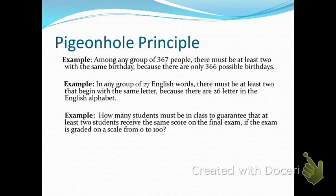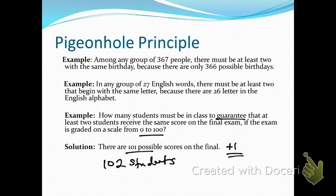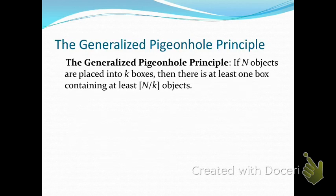How many students must be in a class to guarantee that at least two receive the same score on the final exam, if it is graded on a scale from 0 to 100? Including zero, there are 101 possible scores. To guarantee at least two students share the same score, we always add one — so we need 102 students. Keep in mind this is a guarantee; it might be that everybody scores 100, but to guarantee it in all cases, you always add that plus one. That's the Pigeonhole Principle.